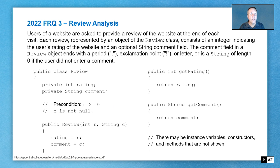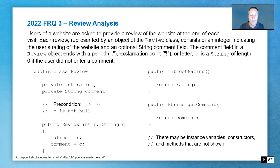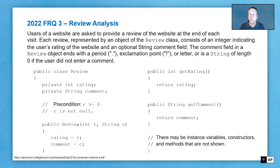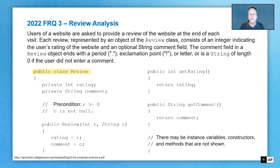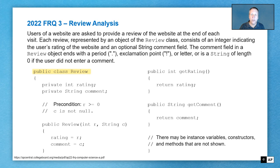This question is number three from last year's free response questions, 2022. And this is called the review analysis question. The story behind this one is that users of a website are asked to provide a review of the website at the end of each visit. Each review is going to be represented by an object of the Review class, and it consists of an integer indicating the user's rating of the website and an optional string comment field. The comment field is going to either end with a period, an exclamation point, a letter, or it is a string of length zero.